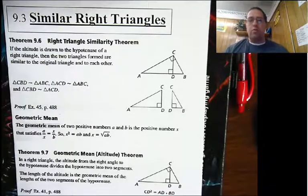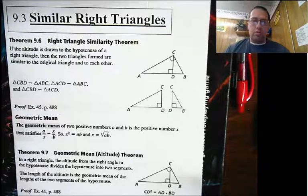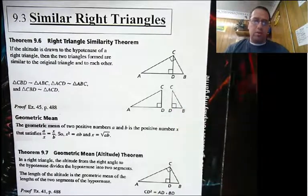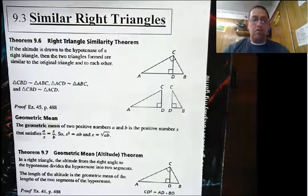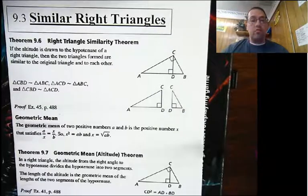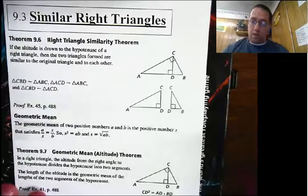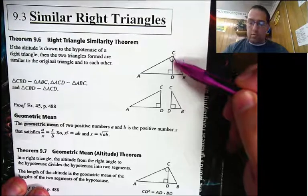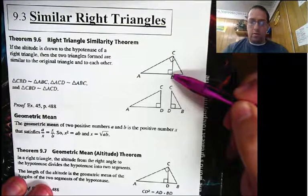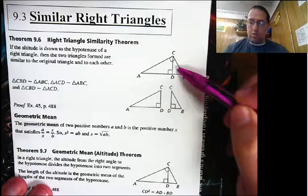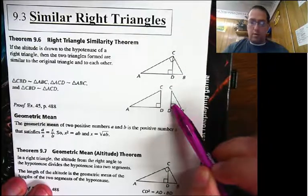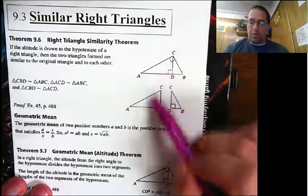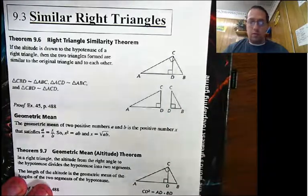So first, the right triangle similarity theorem says if an altitude is drawn to the hypotenuse of a right triangle, then the two triangles formed are similar to the original triangle and also to each other. So here we have an altitude drawn from the right angle to the hypotenuse, which cuts it into two little triangles. And all three of these triangles are going to be similar to each other.